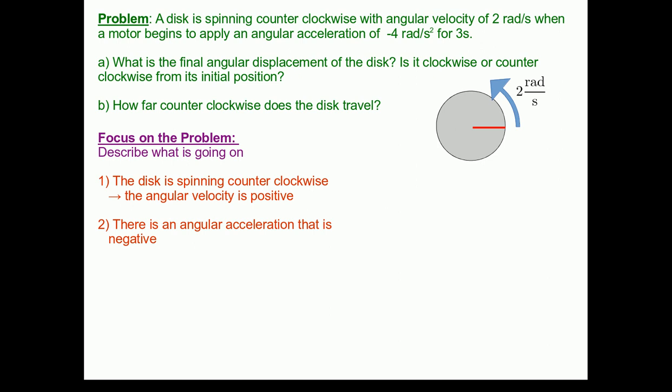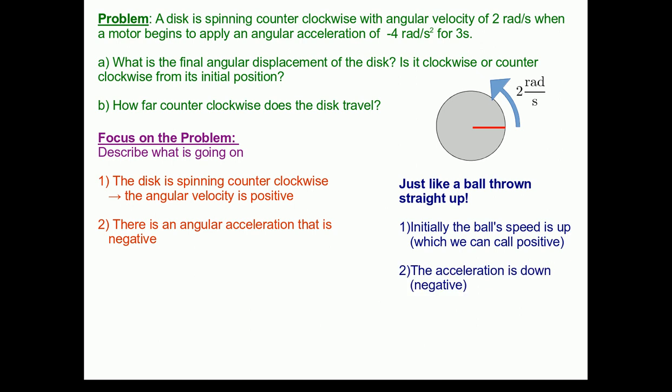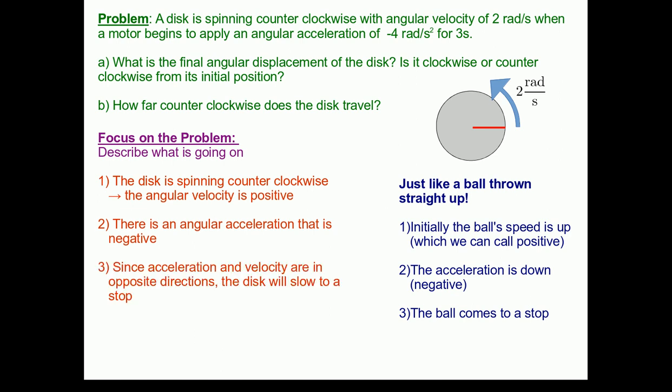A ball being thrown straight up in the air. In that case, the ball begins with an initial velocity that is up, which we can call positive. And the acceleration of the ball due to gravity is down, which if up is positive, then down would be negative. We can use this analogy to determine what's going to happen in our rotational problem. So, the next thing the ball does is it comes to a stop. It's moving upwards, gravity is pulling it down, and at some point the ball comes to a stop at the top of its trajectory. Similarly, since the acceleration and the velocity are in opposite directions for this rotating disc, the disc will slow to a stop.